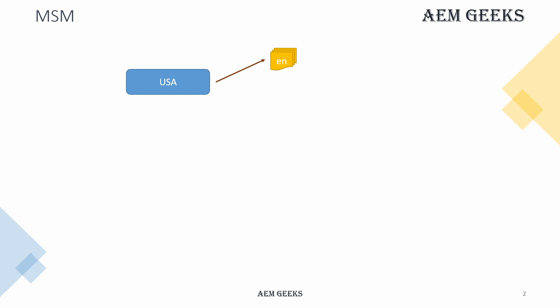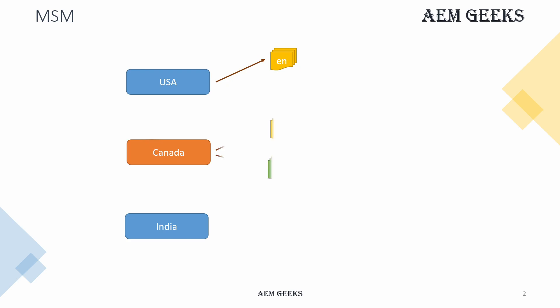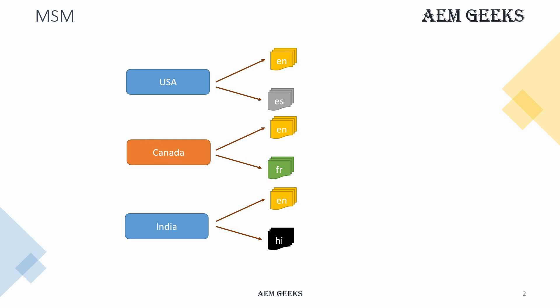Till now, let's say we have created an English site. Now my business has expanded and I'm moving my footprint to other countries - Canada and India. I need websites for these countries, but along with English I also need websites for other languages specific to each country. For Canada I need English and French, for India I need English and Hindi, and for the US I need a Spanish site for Spanish-speaking people.